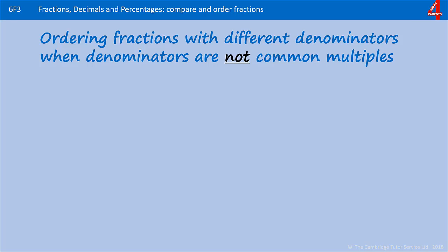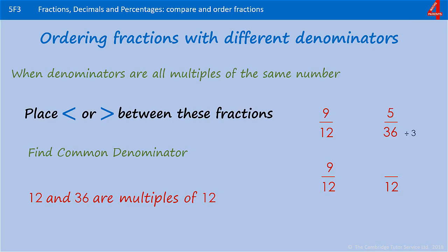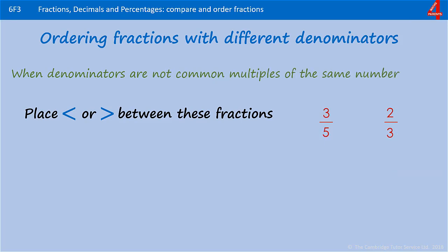Here we're looking at how to order fractions that have different denominators where those denominators are not common multiples. To be able to do what's in this video, you need to be familiar with the previous video where you were ordering fractions with different denominators that were all multiples of the same number. That will help you to understand this one. I'm going to start by just comparing two.